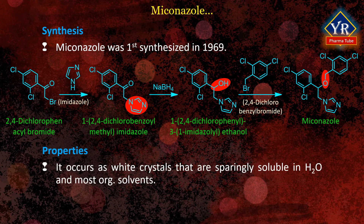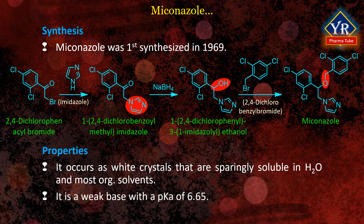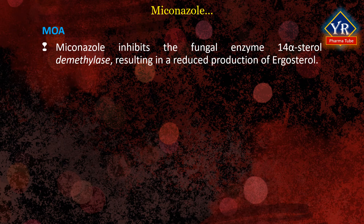Miconazole nitrate occurs as white crystals that are sparingly soluble in water and most organic solvents. The solubilities of miconazole nitrate powder are 0.03% in water, 0.75% in ethanol, and up to 4% in acetic acid. It is a weak base with a pKa of 6.65. Miconazole inhibits the fungal enzyme 14-alpha-sterol demethylase, resulting in reduced production of ergosterol. In addition to its antifungal actions, miconazole, similarly to ketoconazole, is known to act as an antagonist of the glucocorticoid receptor.